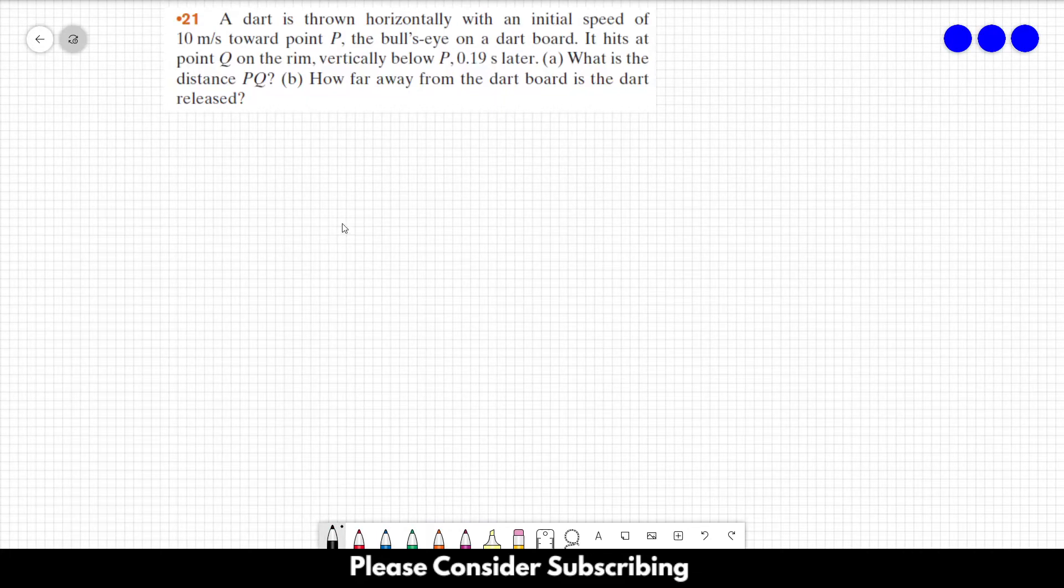Number 21! A dart is thrown horizontally with an initial speed of 10 meters per second towards point P, the bull's eye on a dart board. It hits at point Q on the ring, vertically below P, 0.19 seconds later.